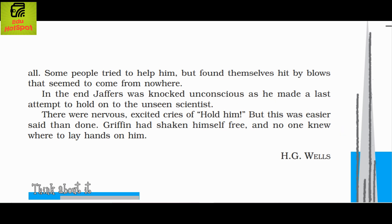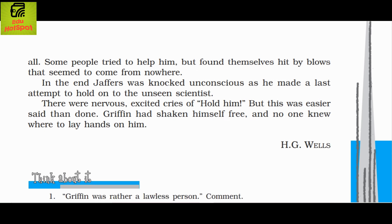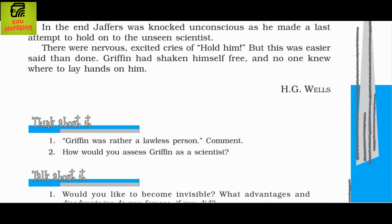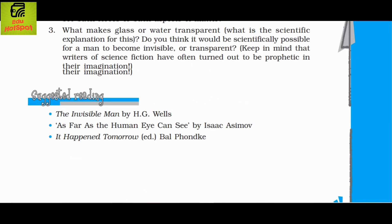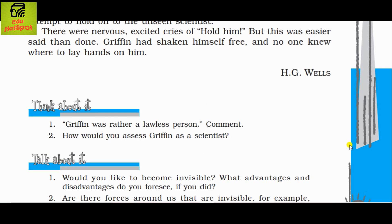So now you know what Griffin did — he misused his discovery. He had burned his landlord's house, stolen money from the clergyman's desk, and attacked the constable. The scientist clearly misused his discovery. If you want, I can also make videos on the exam questions. There are 5 questions in the chapter. Thank you, subscribe the channel and like the video.